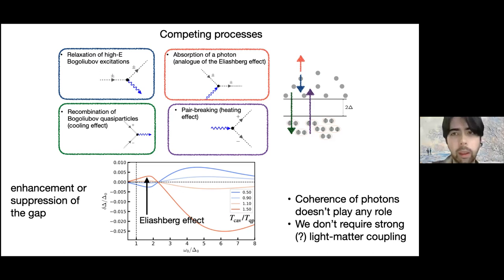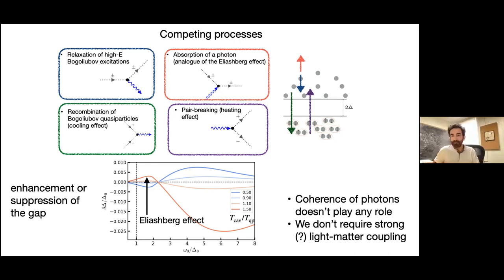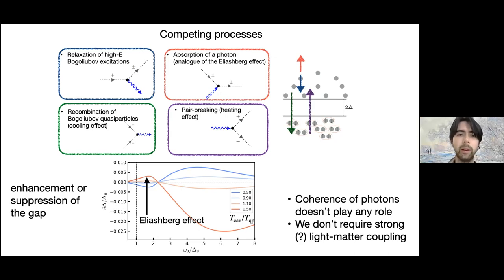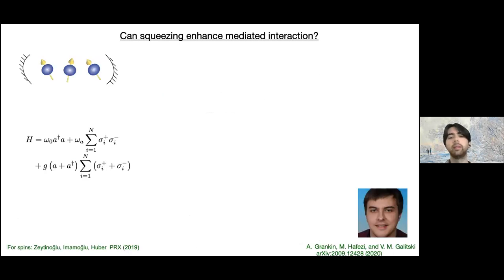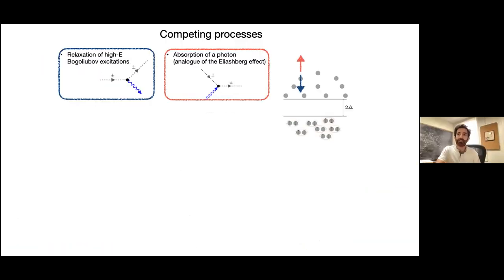A question from the audience about the intersection point of temperature curves at around Ω/Δ ≈ 2.3: Hafezi thinks it is an artifact that would change in the multimode case. Moving on: since coherence of photons doesn't matter in the previous analysis, the next question is what squeezed light does to superconductors. Considering a vacuum squeezed state and a bunch of spins (two-level systems) coupled to a cavity.